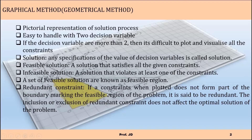A redundant constraint is one that, when plotted, does not form part of the boundary marking the feasible region of the problem — it is said to be redundant. The inclusion or exclusion of a redundant constraint does not affect the optimal solution of the problem, meaning adding or removing a redundant constraint has no effect on the optimal solution.